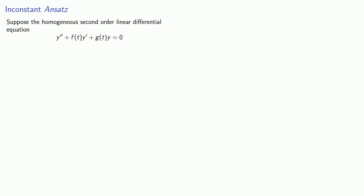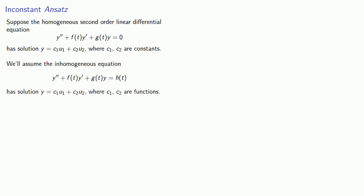We'll assume we can solve this and assume that this has solutions y equals c1u1 plus c2u2 where c1 and c2 are constants. Now we'll assume the inhomogeneous equation has solutions y equals c1u1 plus c2u2 where c1 and c2 are functions.